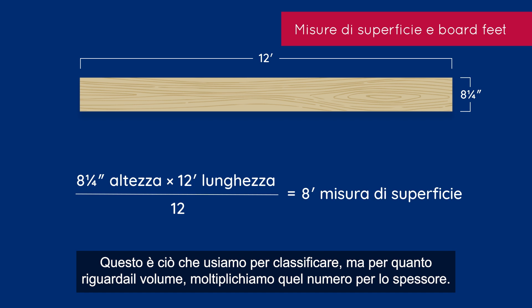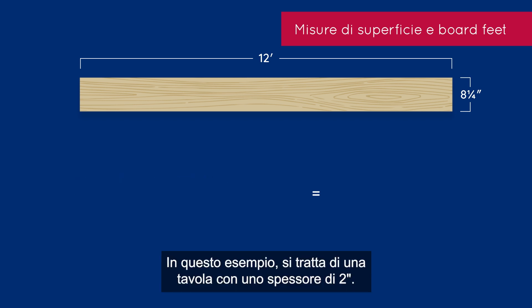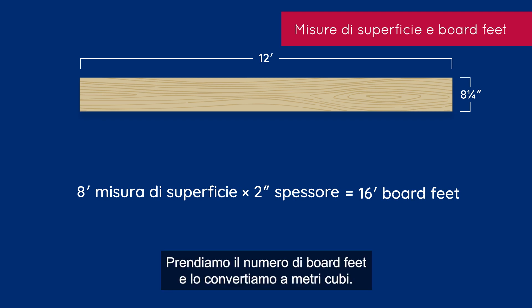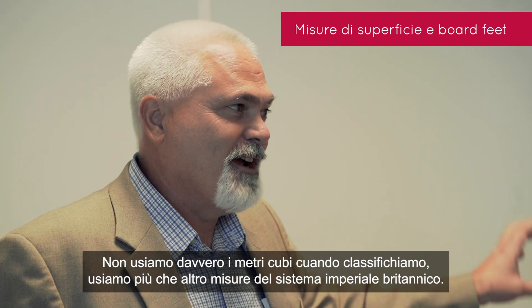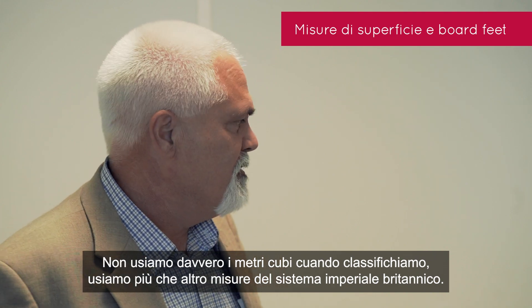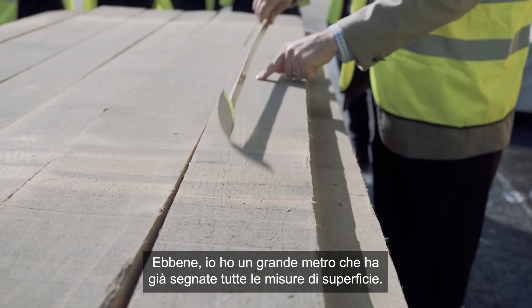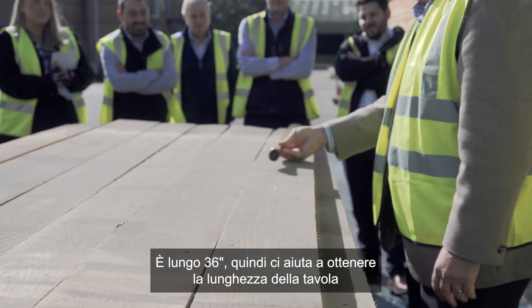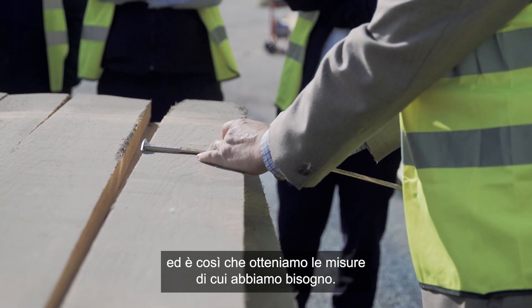That's what we use to grade. For the volume, you multiply the surface measure times the thickness. This example is a 2-inch thick piece with an 8-foot surface measure, so that's 16 board feet. We take board feet and convert it to cubic meters — though we don't use cubic meters when actually grading; we're using imperial measurements. I have a grading rule that's 36 inches long to help us get the length of the board, and on the 12-foot scale it gives us inches and fractions of an inch.